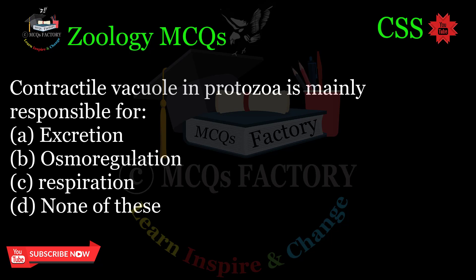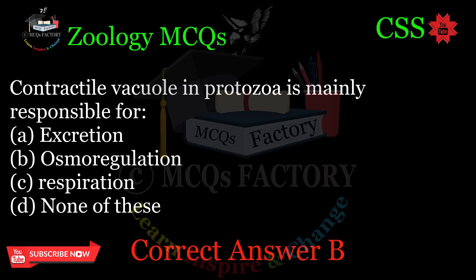The contractile vacuole in protozoa is mainly responsible for: A. Excretion. B. Osmoregulation. C. Respiration. D. None of these. Correct answer: B.